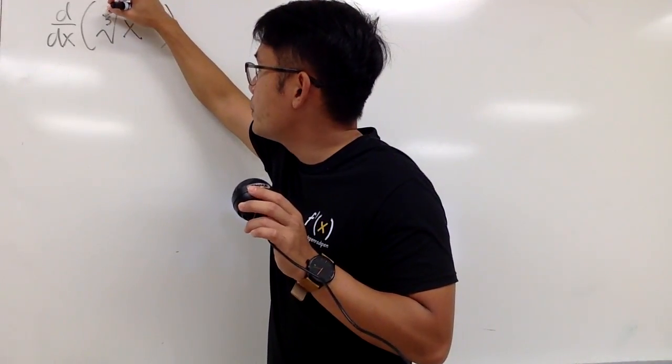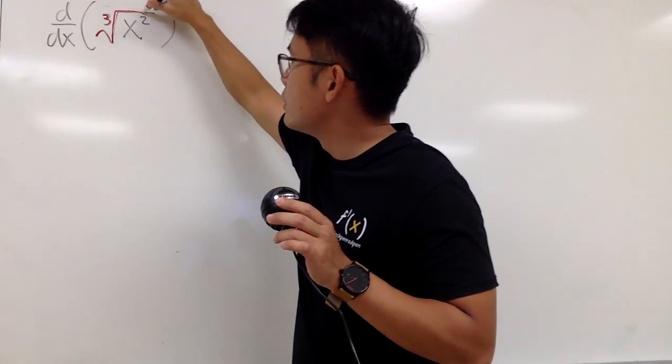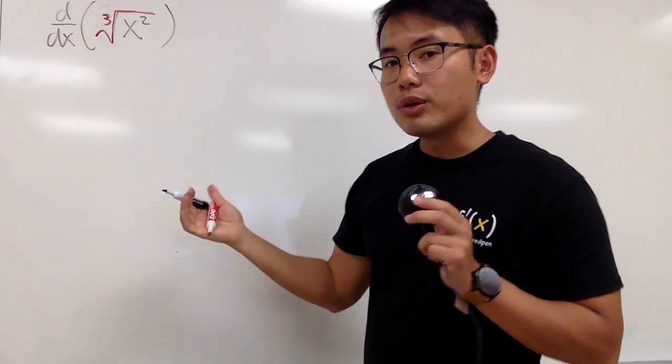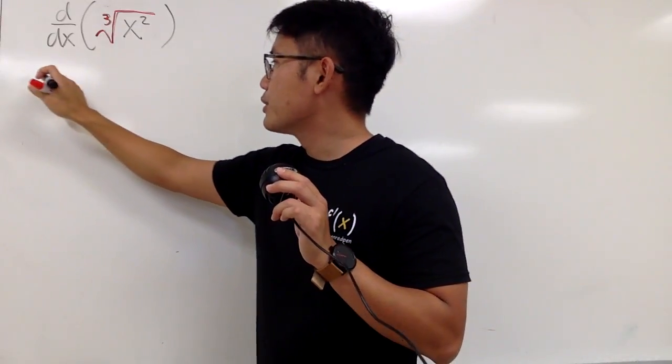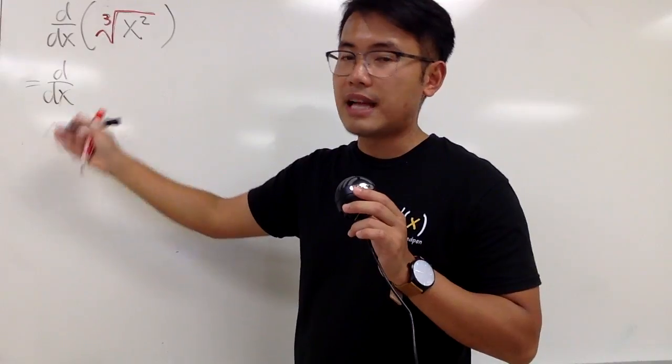So when you have the cube root situation, you have to remember that we can change this to the power form. So let's go ahead and rewrite this. We are still going to be differentiating, because we haven't done the derivative yet, so write this down.